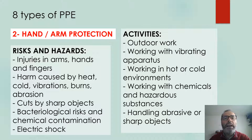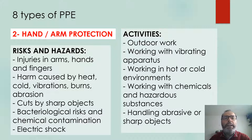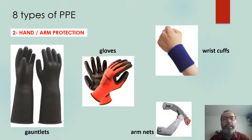The second type is hand and arm protection. This PPE helps to prevent injuries in arms, hands, and fingers related to harm caused by heat, cold, vibrations, burns, abrasion, cuts by sharp objects, some risks related to bacteriological aspects, and also chemical contamination, as well as electric shock. Typical activities relevant to this type of PPE include outdoor work in general, working with vibration apparatus, working in hot or very cold environments, handling of chemicals and hazardous substances, and the handling of abrasive and sharp objects. Examples include gauntlets, gloves, wrist cuffs, or arm nets that help to prevent cuts in the arm.